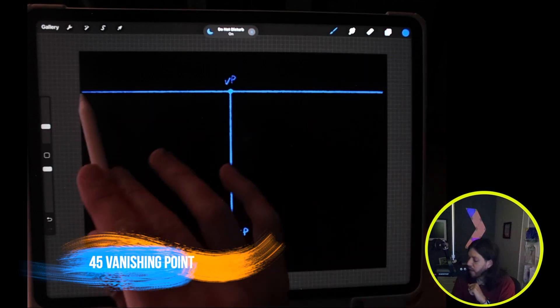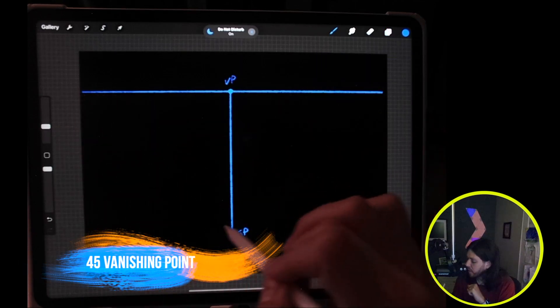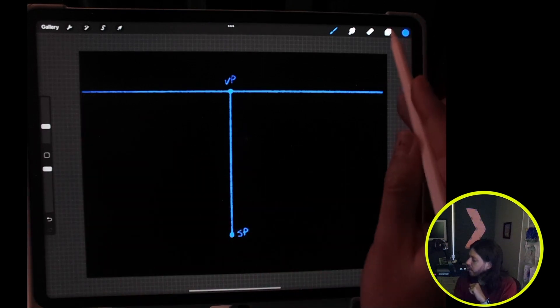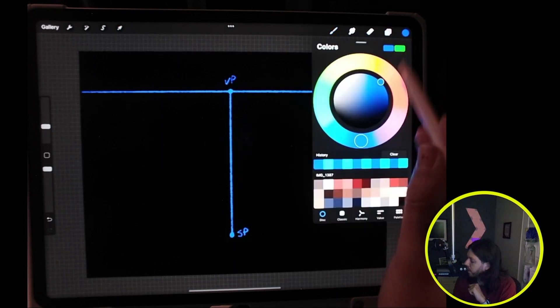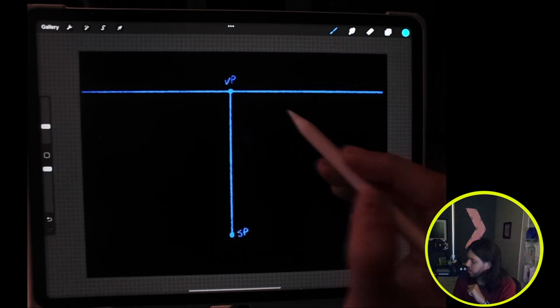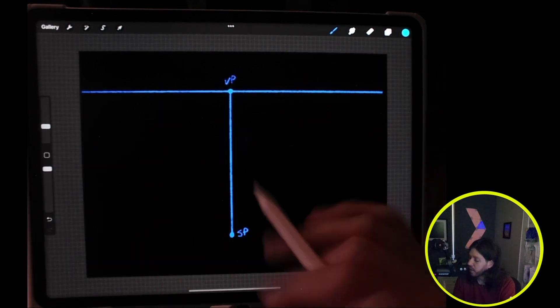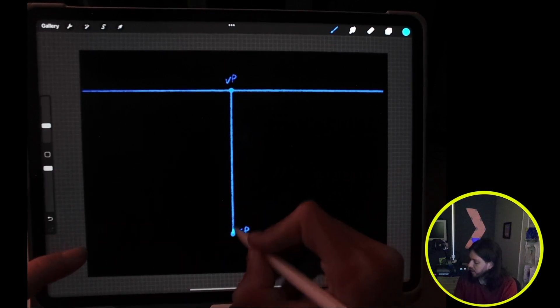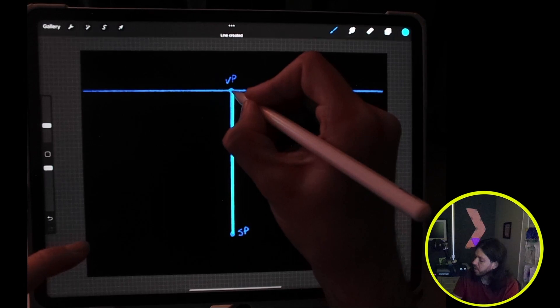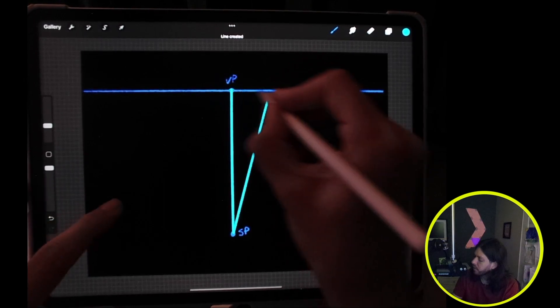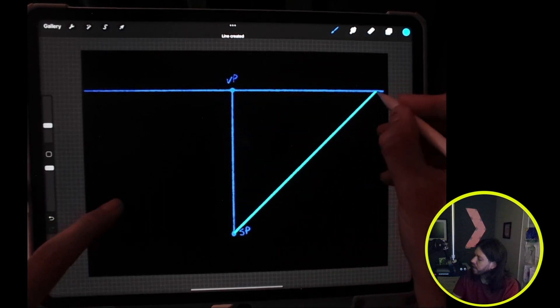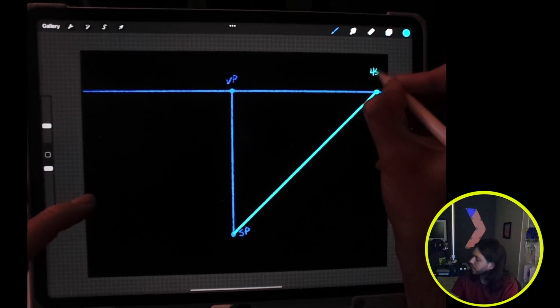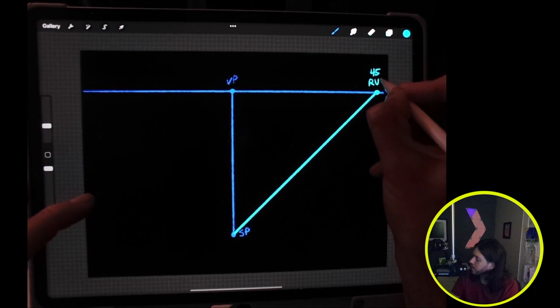Now that we have that, we will draw a 45-degree angle from the station point to the horizon line on each side. I'm going to do a new layer and a new color so we're going to hide this later away from the grid. If I start here at the station point and come up to the vanishing point and then I tap and hold 15, 30, 45, this will give us our 45-degree right vanishing point.